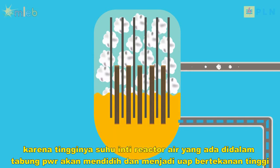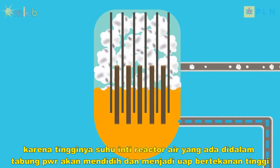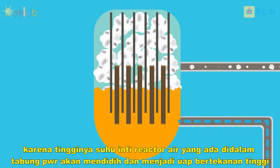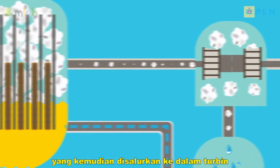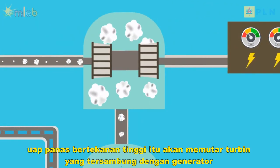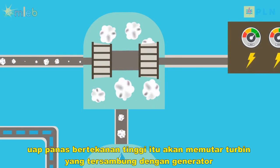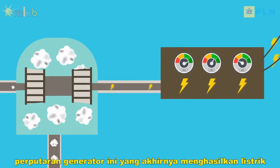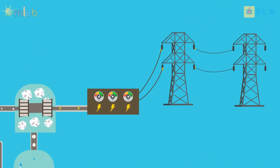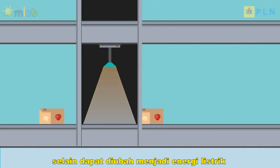Due to the high temperature of the reactor core, the water inside the PWR tube will boil and become high-pressure steam, which is then channeled into the turbine. The hot high-pressure steam will spin the turbine connected to the generator. This rotation of the generator ultimately produces electricity.